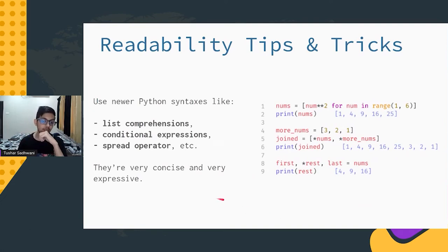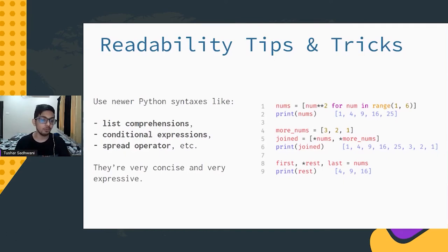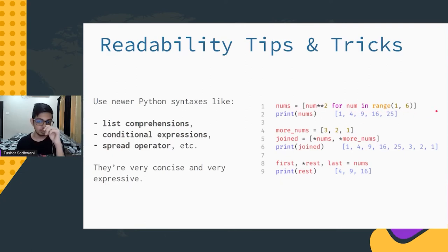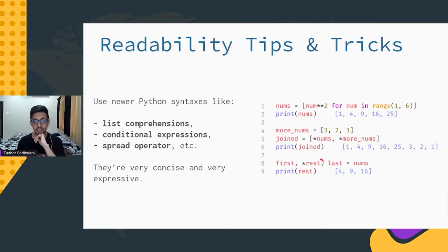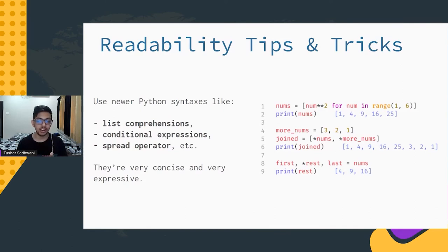The second tip is about using some of the newer syntax in Python — things like list comprehensions, conditional expressions, the spread operator — things that are novel to Python but are actually really powerful because they're very concise and expressive. You can create a list of squares from a range with a single line list comprehension, join two lists using the spread operator, or extract the middle part of a list in a single line. These small improvements can go quite a long way in making code much more readable and Pythonic.